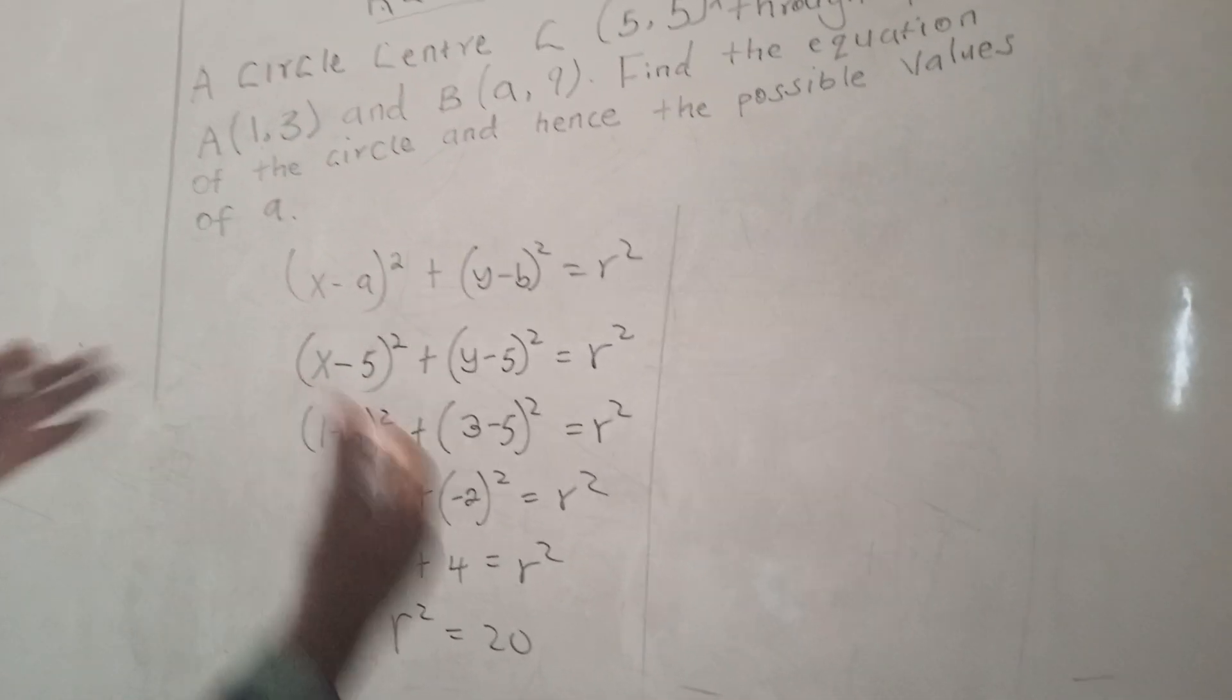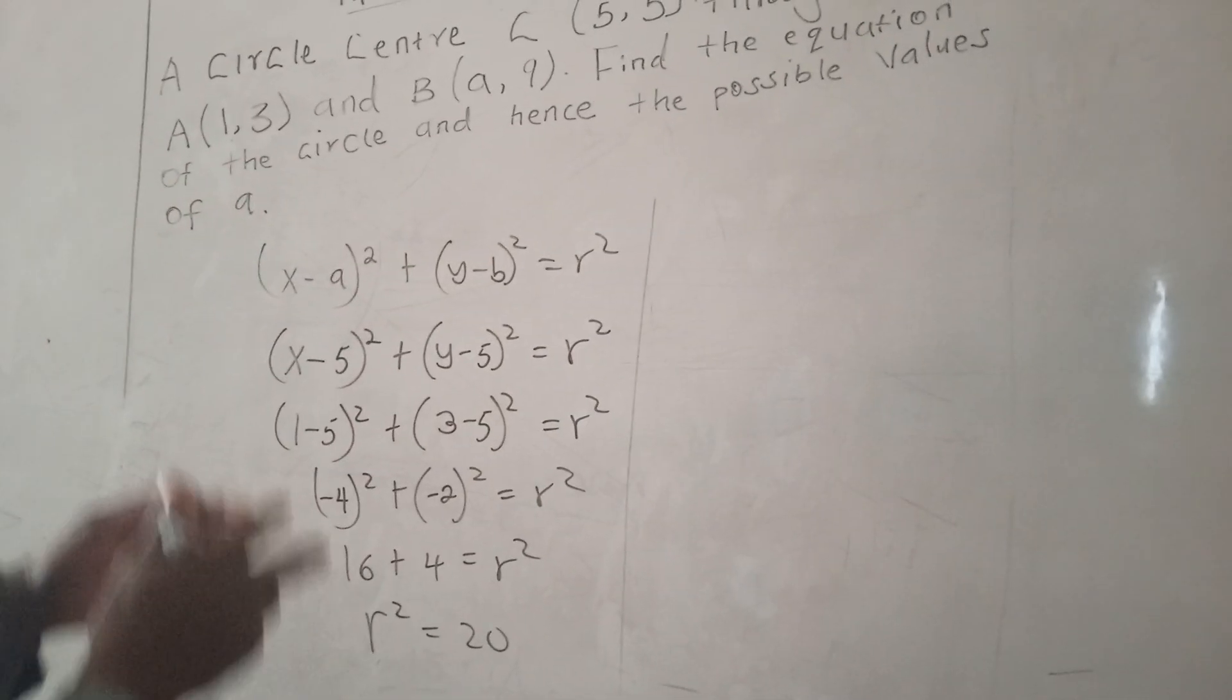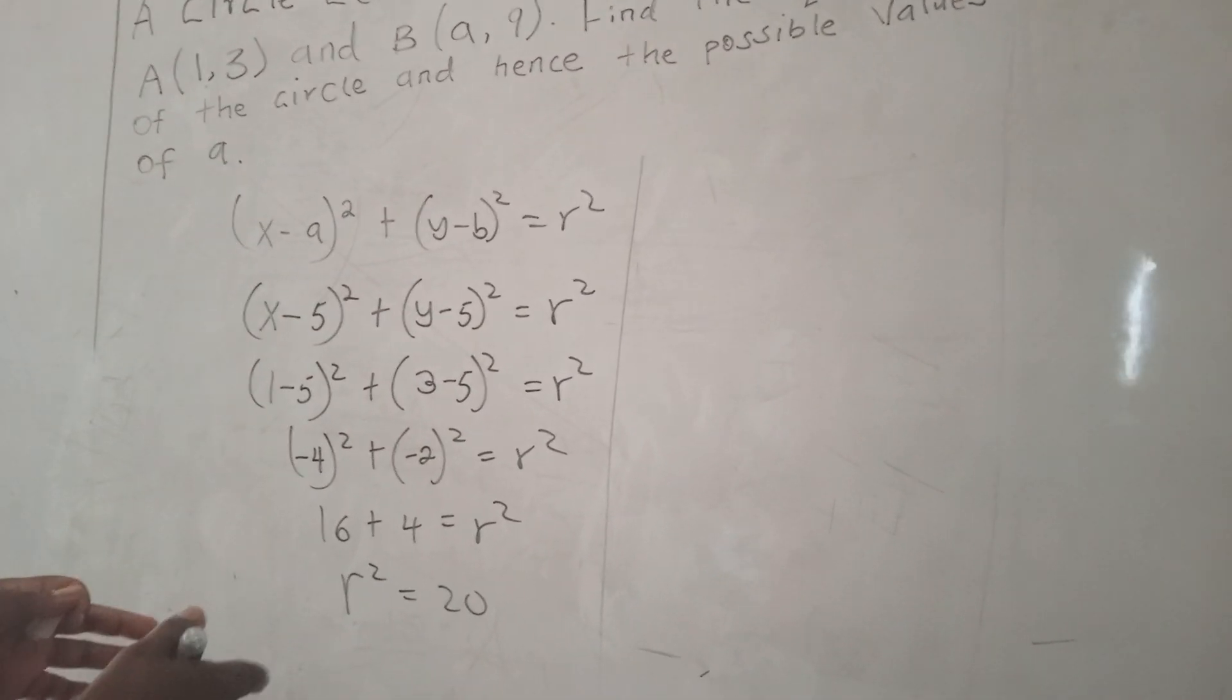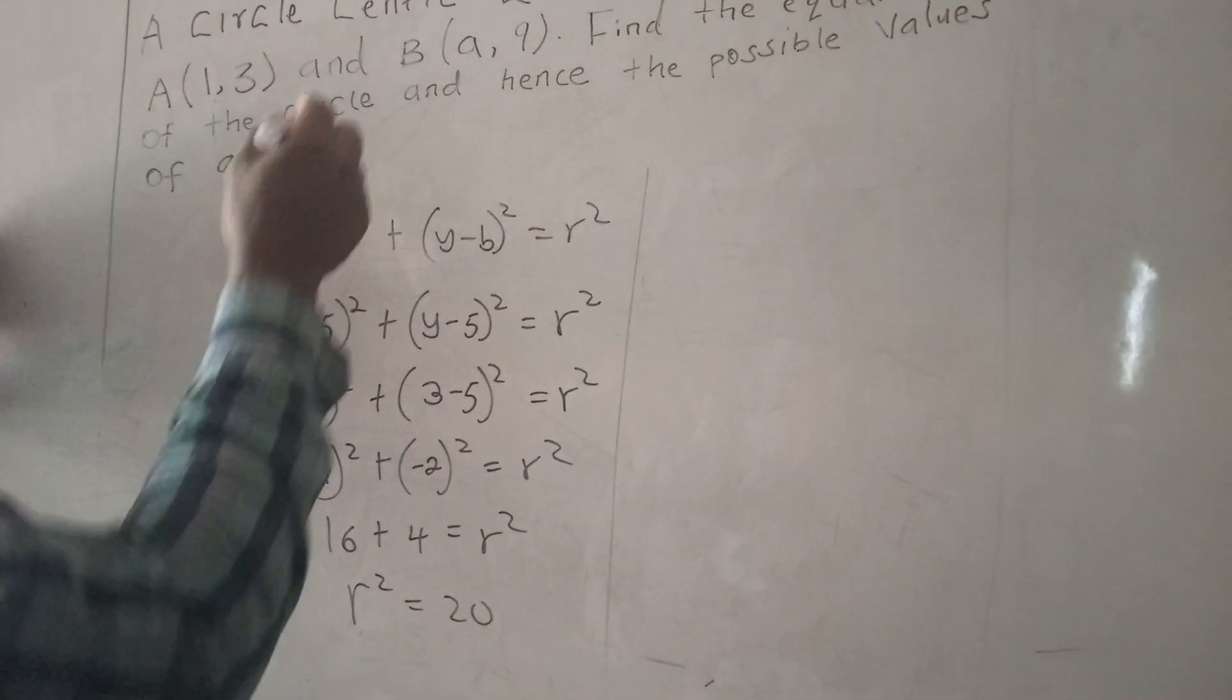Because whichever point we choose along the circumference of the circle, the radius should always be the same. The radius is always constant.